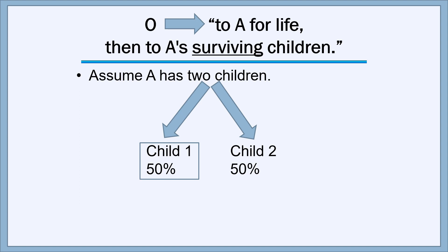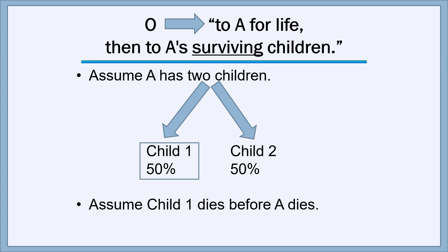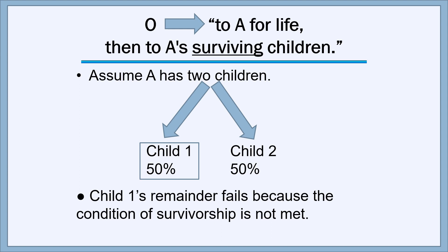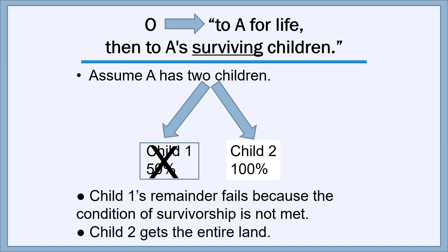Now let's change the question and consider 'to A for life, then to A's surviving children.' Again, A has two children, each with a 50% interest. If child one dies before A dies, what happens to child one's 50% share when A dies? Because child one has to survive A in order to qualify for the remainder, the remainder fails as to child one's 50% — that interest is canceled out. Child two's interest then becomes 100%, and child two will get the entire land.